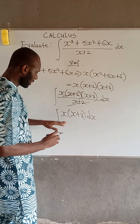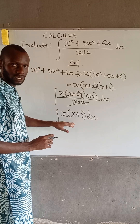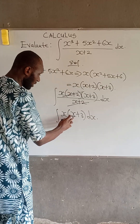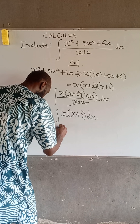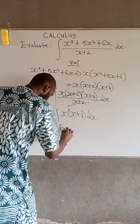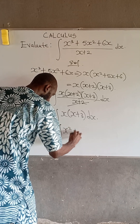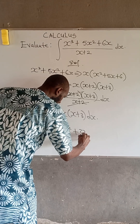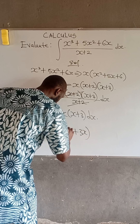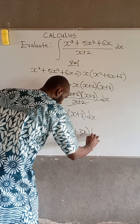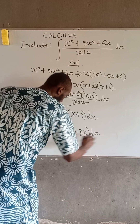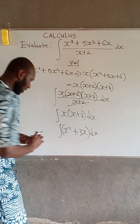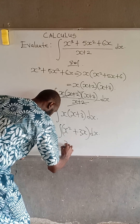We can expand the bracket: x times x is x squared, and x times 3 is 3x. So we have the integral of x squared plus 3x, dx. If we integrate this, this becomes x cubed divided by 3 plus 3x squared divided by 2, plus C.